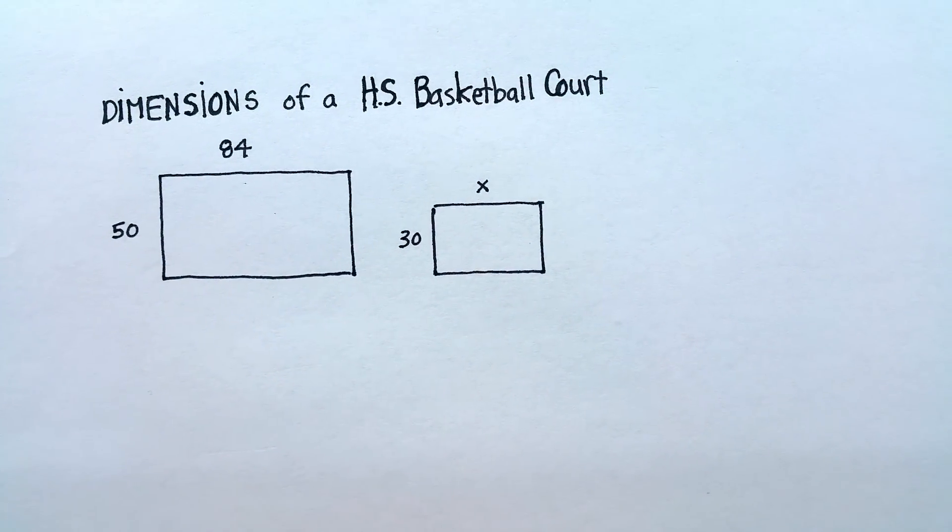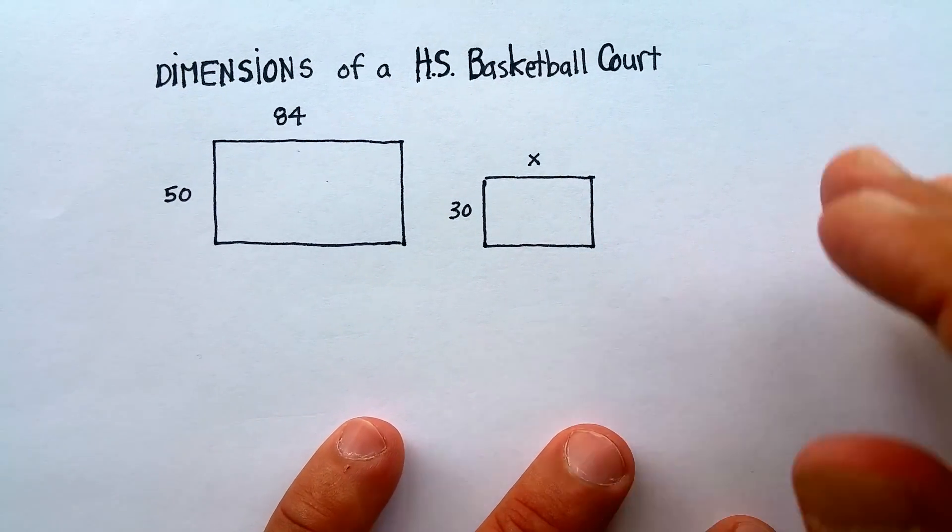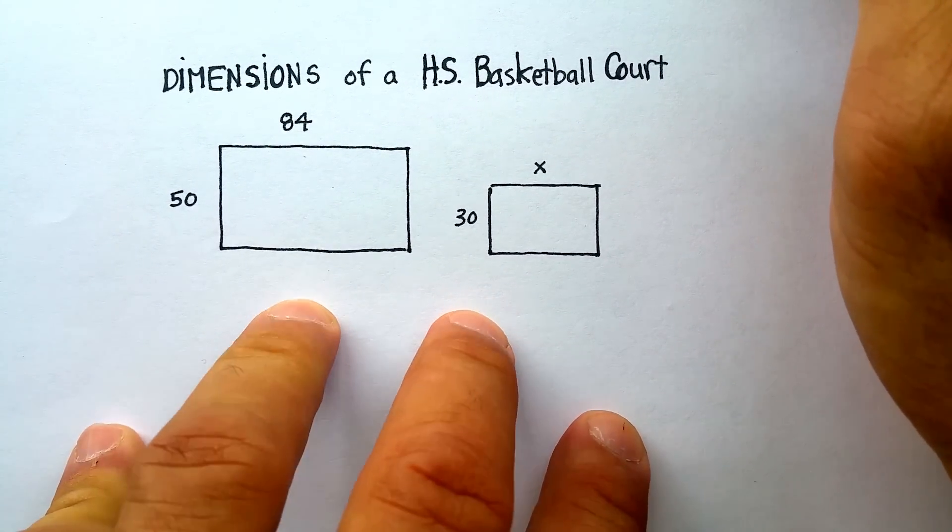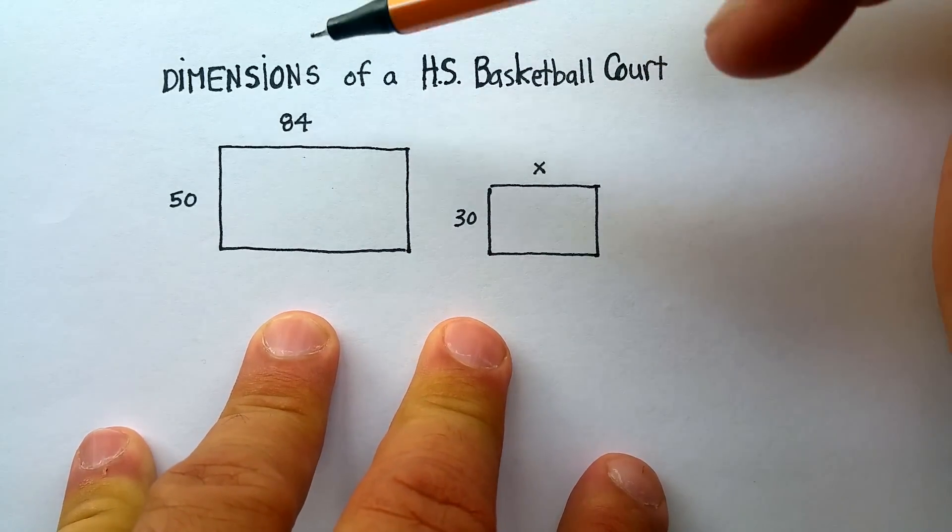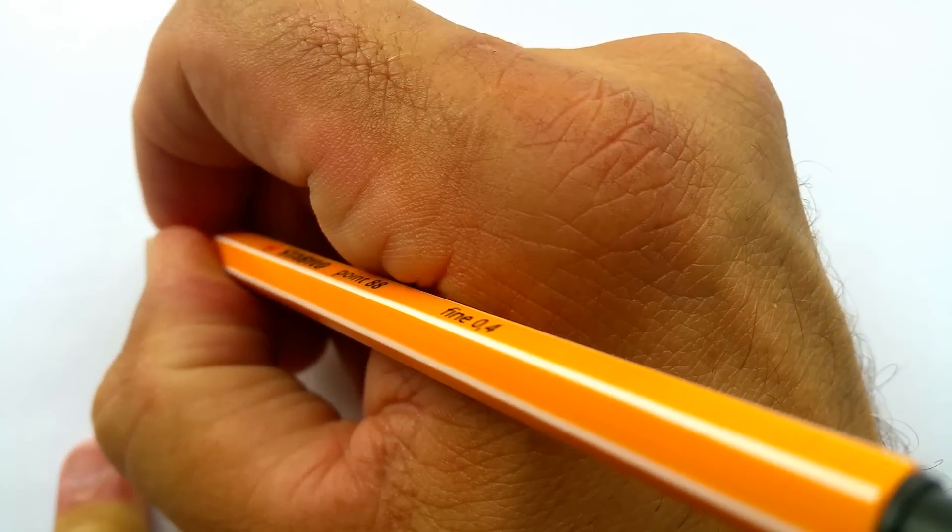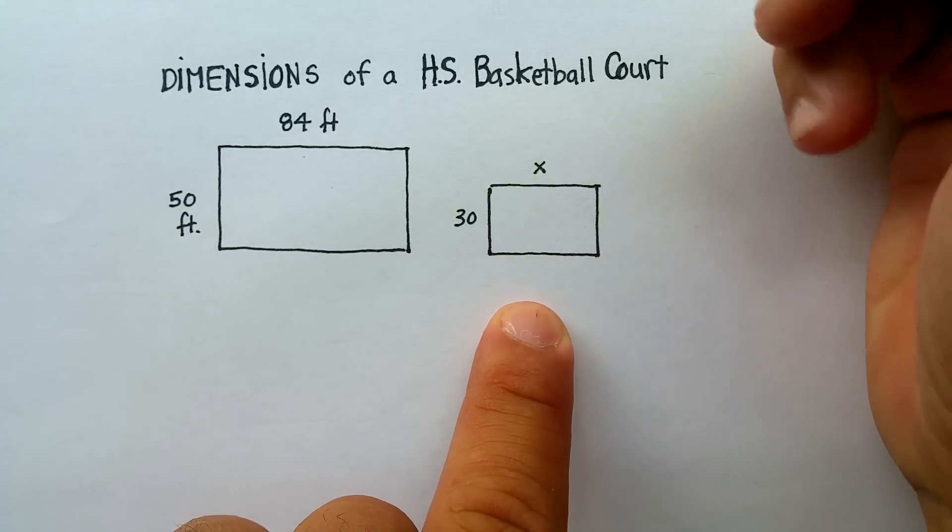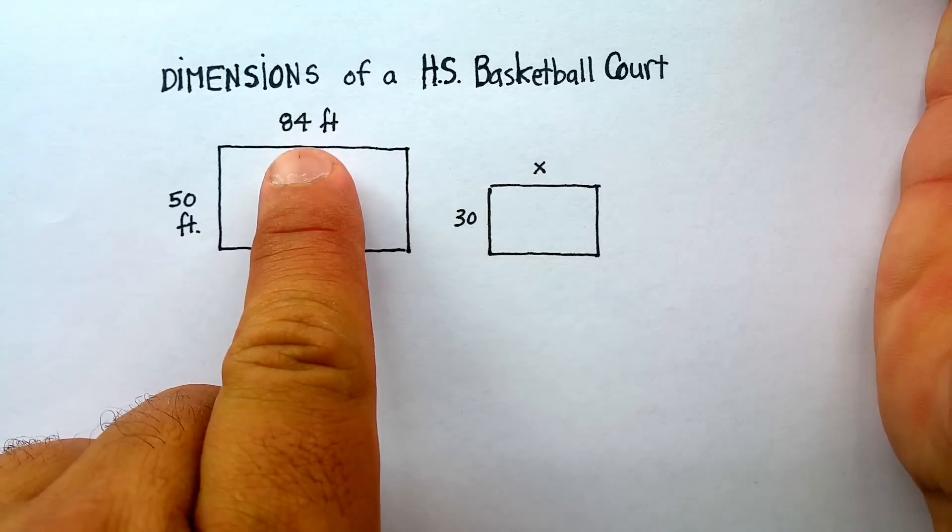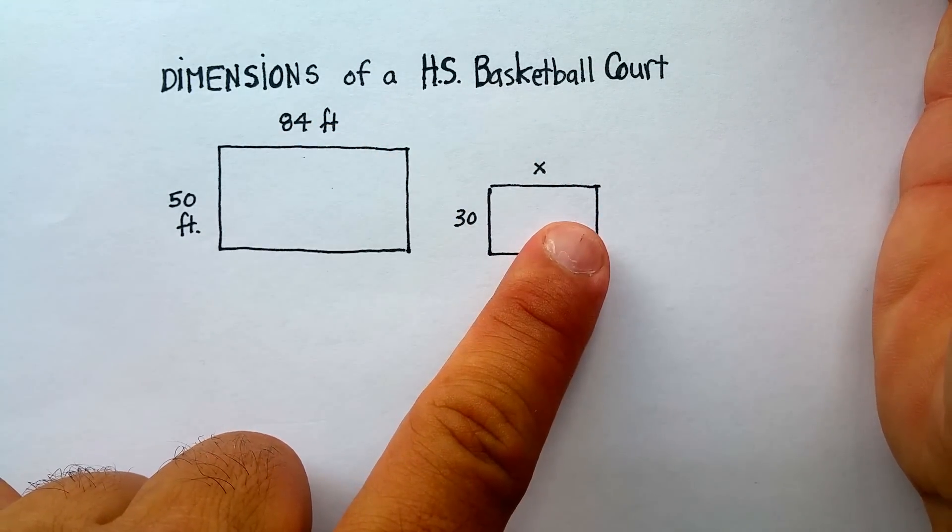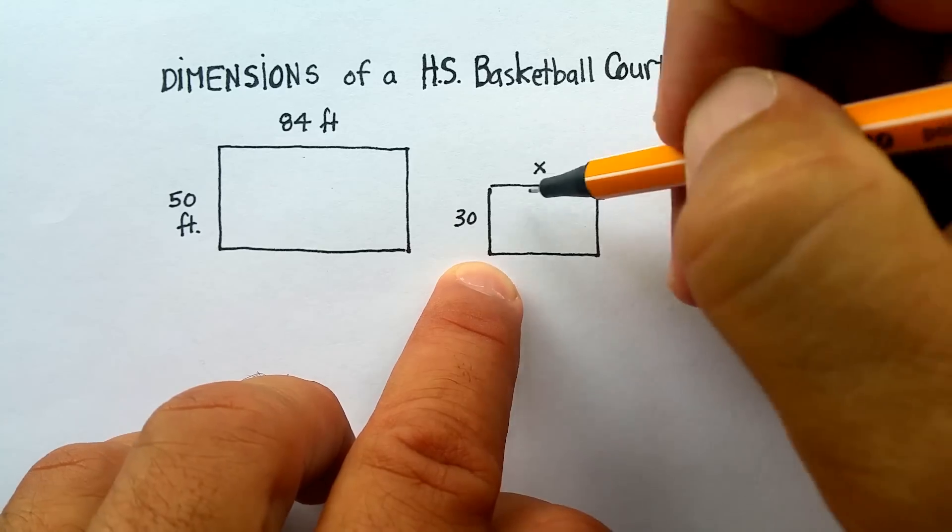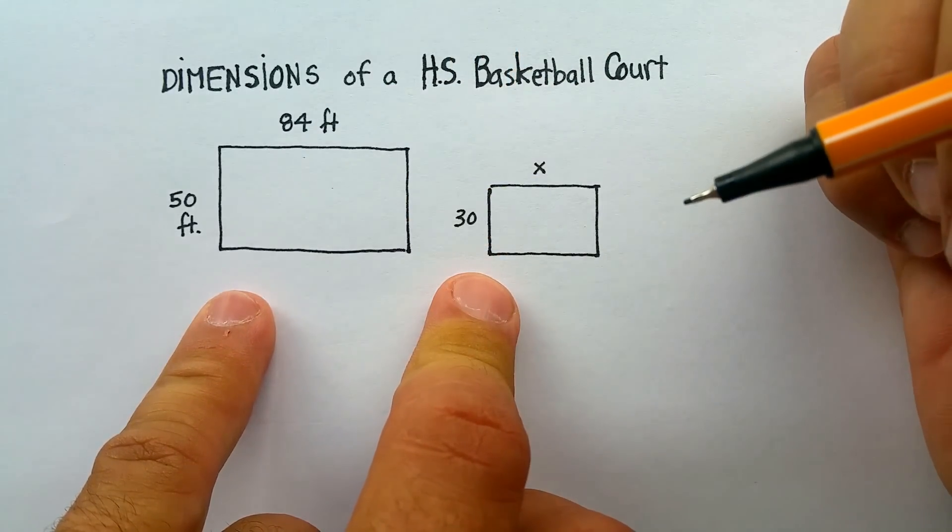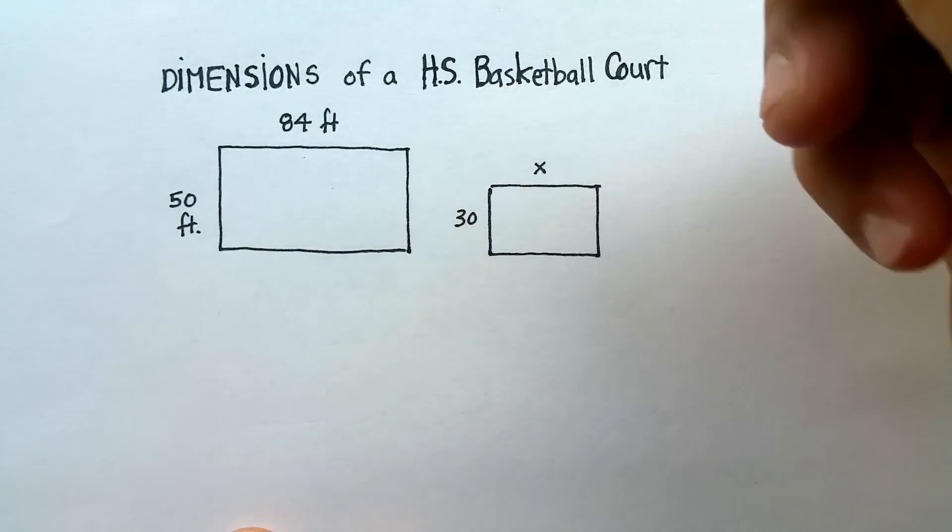Now, one of the things I love about geometry is that it's always talking about some type of real-life application. So here's a real-life application. The dimensions of a high school basketball court are 84 feet by 50 feet. Now, let's say that you had a smaller patch of land, and you want to keep the proportions the same between the two courts. I don't have 50 feet here, so I want to make this smaller, but I still want to keep it in ratio or proportion to the larger, more original basketball court.